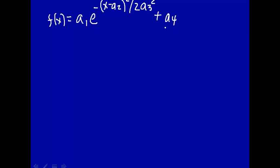What we had for the harmonic oscillator was a1 was 1, a4 was 0, and a2 was 0. So this is just x squared over 2 times the standard deviation squared.